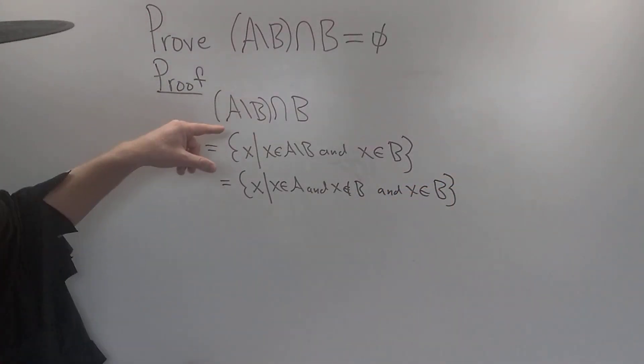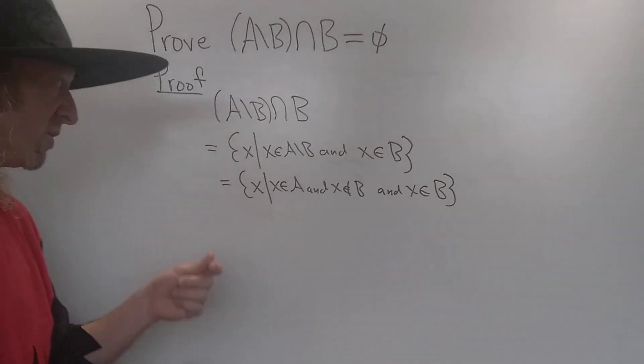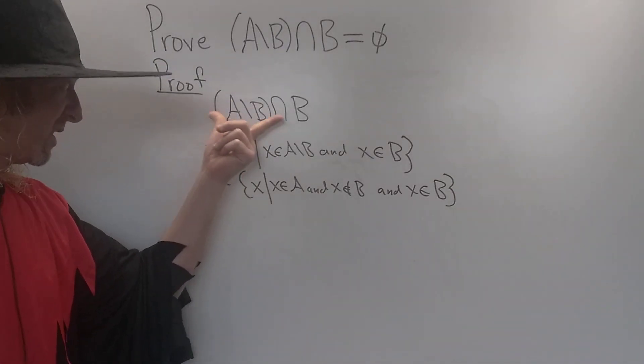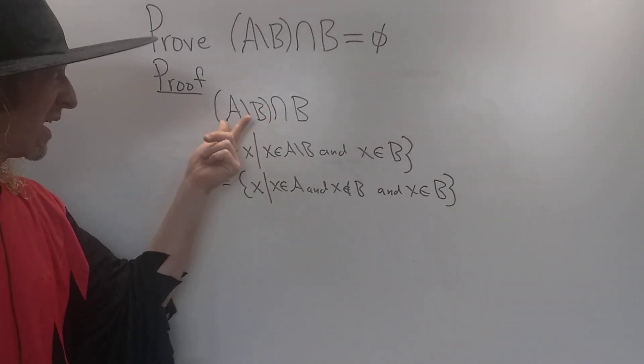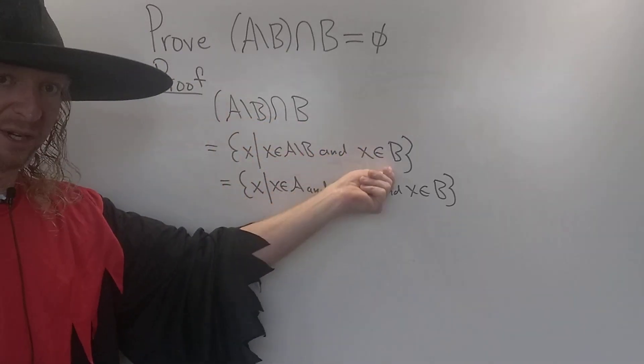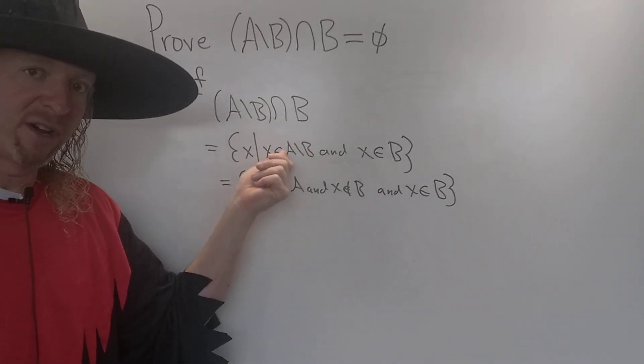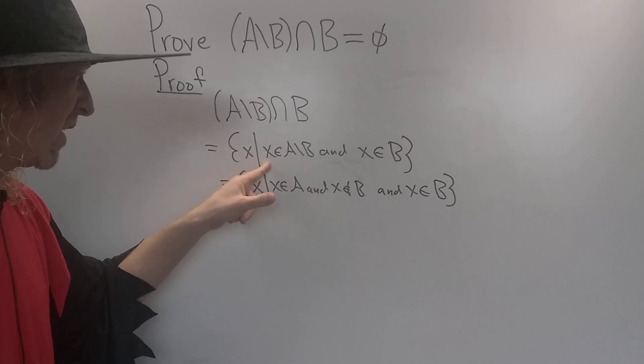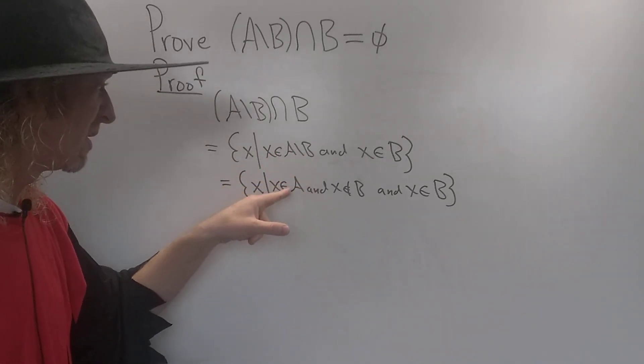So again, the first step was to use the definition of intersection. So this set is the set of all X such that X is in this element and is in this element. Boom, there it is. Then we use the definition of set difference. If X is in A set minus B, that means it's in A and it's not in B. So now we have the statement.